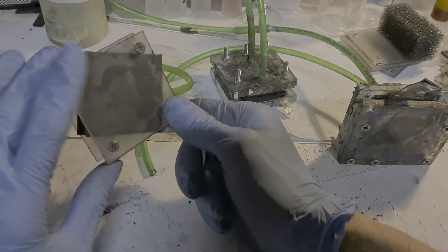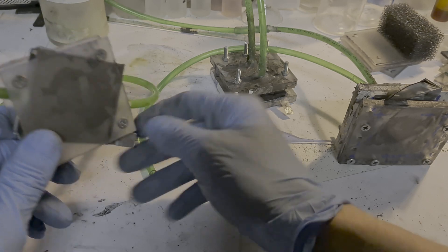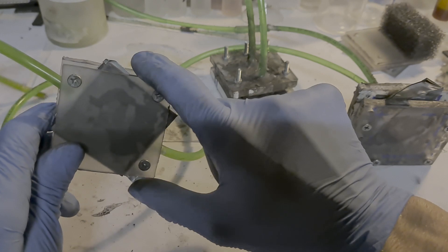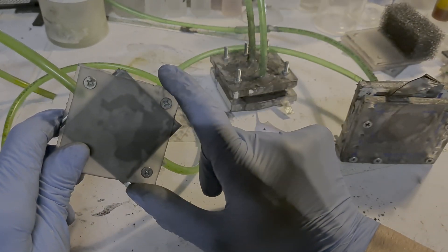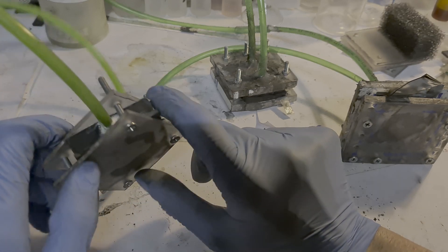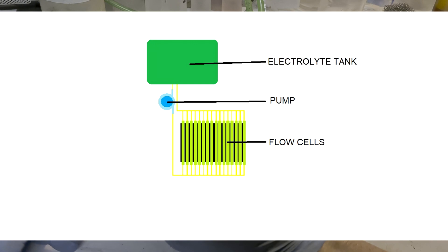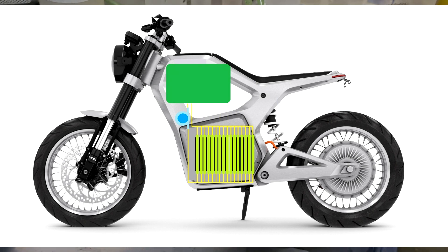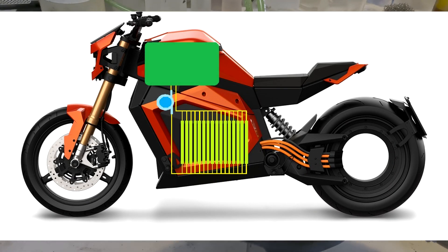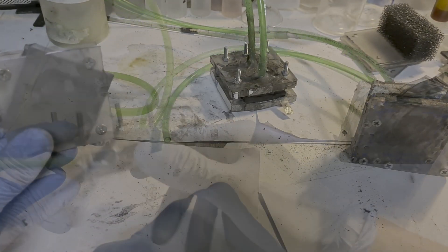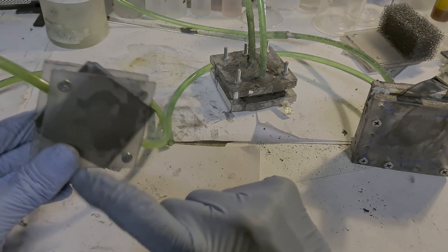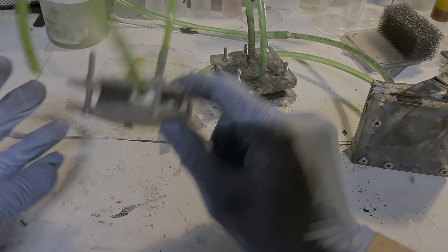I was so impressed by this cell design that I have an ambitious plan for the future: to use this cell design technology in a motorbike. In the motorbike I will use 20 of these cells, all connected to an external electrolyte tank that can hold three, five, or even six liters of electrolyte. This will be my power source for the motorbike — my ambitious plan for using this semi-flow cell design in a motorbike application.